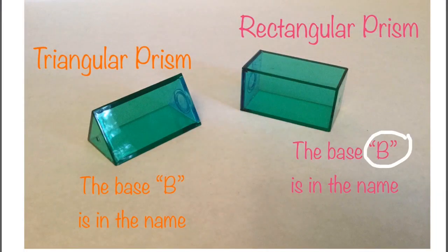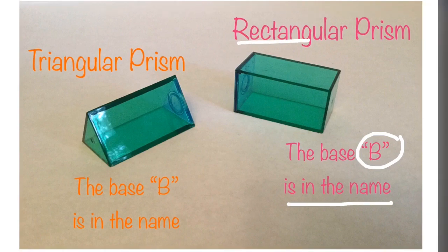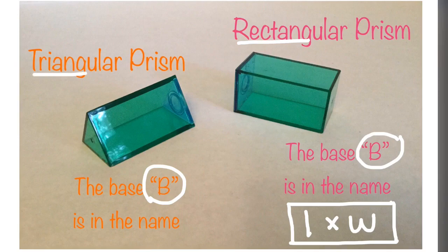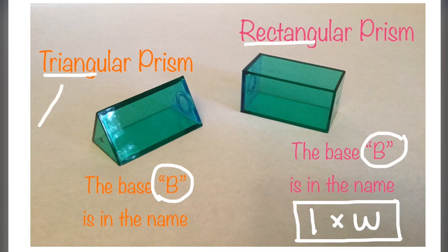So when we're talking about big B, big B stands for the area of the base, and the base is in the name. So rectangular prisms have a rectangle as the base, which is length times width. A triangular prism has a triangle as the base, and the area formula for the triangle is one-half BH, or half of the base times the height.